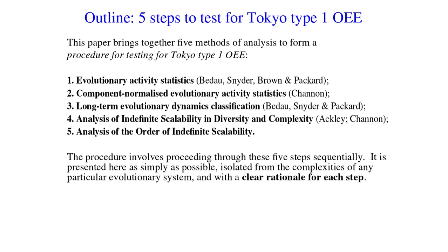The five methods are: first, Evolutionary Activity Statistics from Bedo, Snyder, Brown, and Burt; second, my contribution — component-normalised evolutionary activity statistics; third, the long-term evolutionary dynamics classification from Bedo, Snyder, and Picard; fourth, analysis of indefinite scalability in diversity and complexity, with indefinite scalability being an idea from Ackley and my contribution being to establish how to use that for analysis; and fifth, analysis of the order of indefinite scalability. The procedure involves proceeding through these five steps sequentially, presented as simply as possible, isolated from the complexities of any particular evolutionary system, and with a clear rationale for each step.